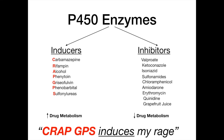Crap GPS: carbamazepine, rifampin, alcohol, phenytoin, griseofulvin, phenobarbital, and sulfonylureas — they all induce P450, which means P450 shows up and breaks down other drugs faster, so those drugs don't have as big an effect. If you know the inducers, then by process of elimination you'll know the inhibitors. Just memorize the inducers using the mnemonic, and on test day if a drug isn't on the CRAP GPS list, you'll know it's an inhibitor. I've done this my whole life in medicine and it's never been a problem.